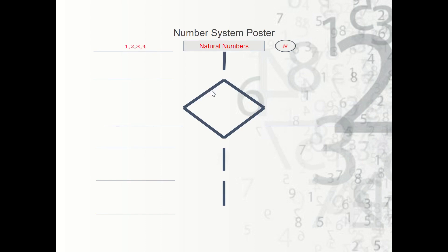Once we start learning our numbers and know how to count up to ten, twenty, thirty, forty, the next thing we learn is there's a number that represents nothing — we have to add that in. When you say how many apples do you have, we need to be able to say I have no apples. So we learned that there was zero. We call that whole numbers. Whole numbers are N with a subscript zero, meaning the natural numbers plus zero. Examples would be zero, one, two, three, four, five, etc.